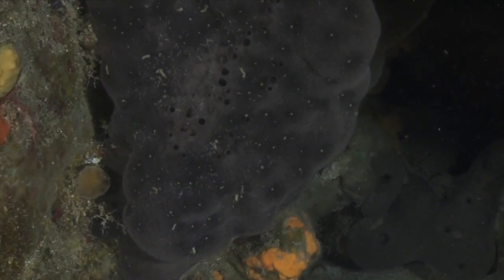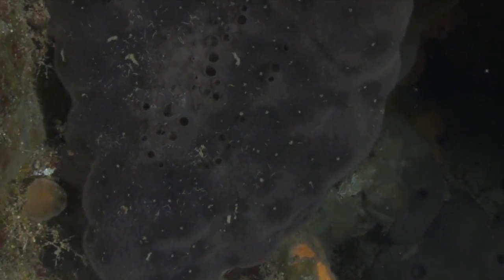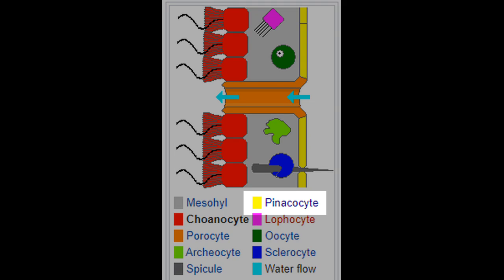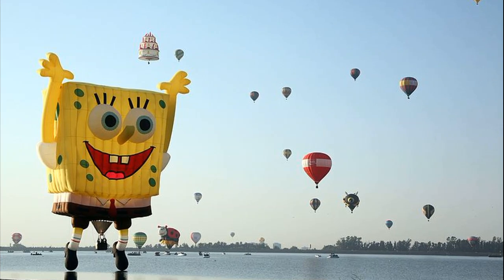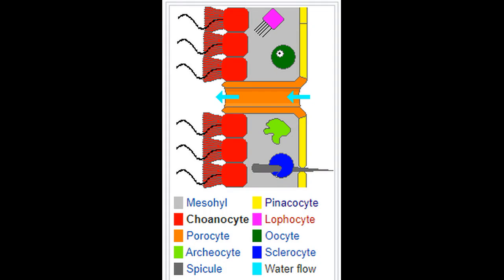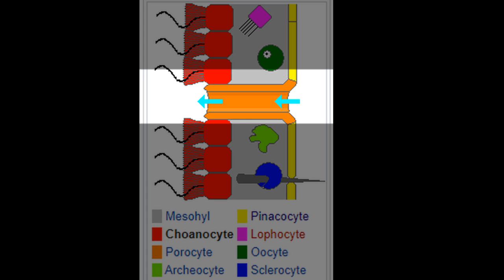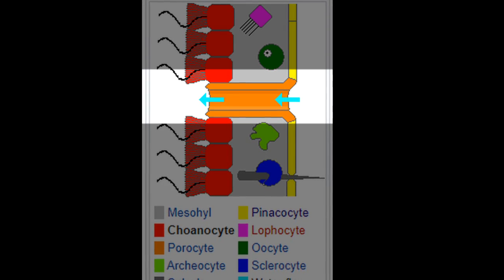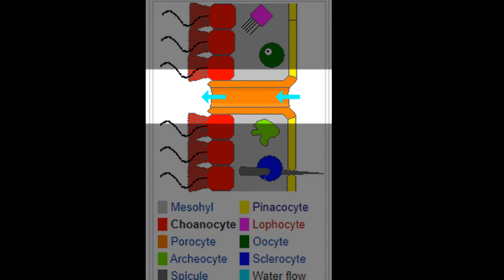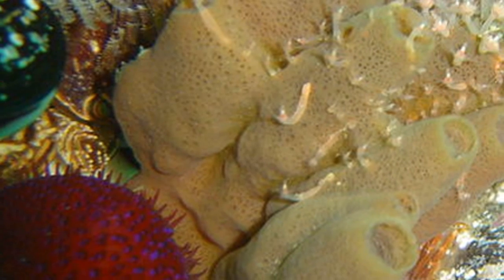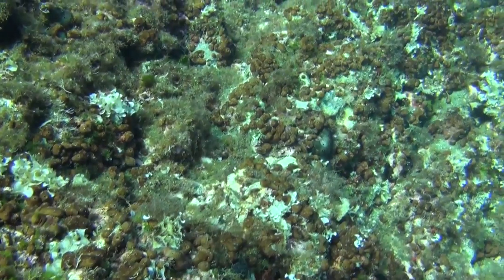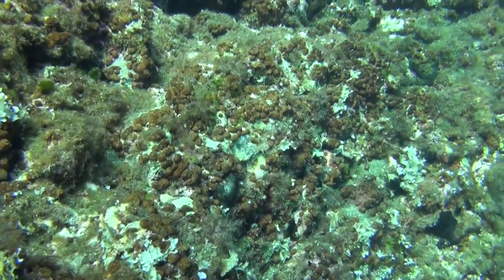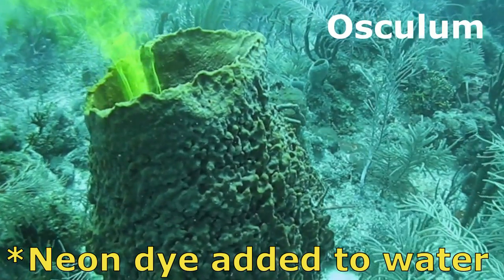A sponge's body is made up of groupings of cells that work together to meet the sponge's needs. Cells called pinacocytes form a skin-like layer on the sponge's outer surface, protecting the sponge. Sponge bodies are covered in tiny pores called porocytes — elongated cells that connect the outside of the sponge to their inside cavity. These pores are also called ostia, and they provide an opening for water carrying food and oxygen to enter the sponge's body.